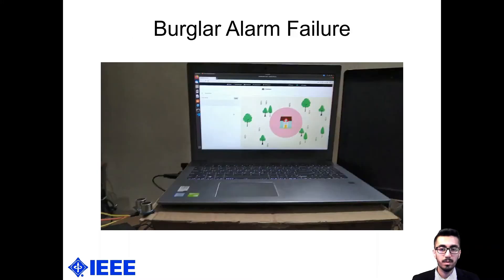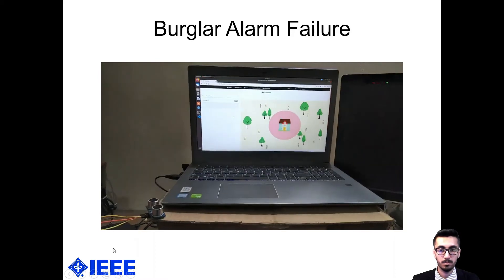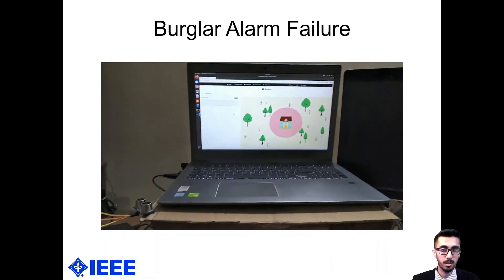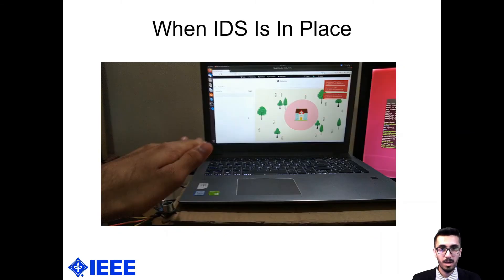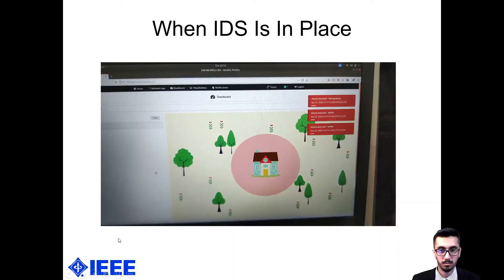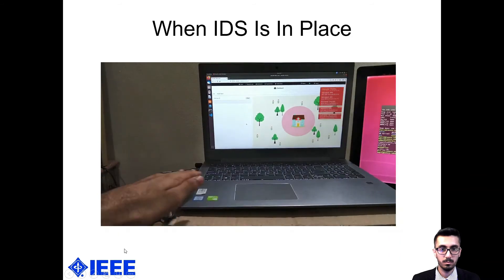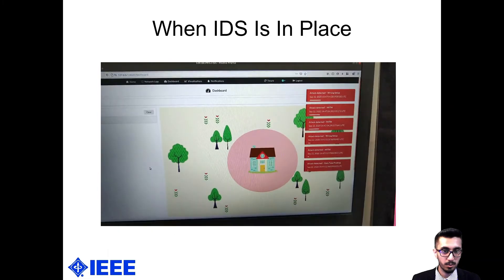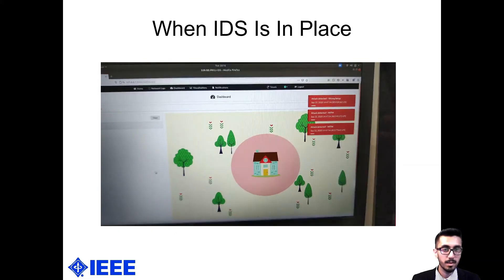Now, what would happen if some hacker manages to disable this burglar alarm? That's right — even after moving the hand on top of the ultrasonic sensor, the burglar was not spotted this time. Now let's see what happens when the IDS is in place, when there's something malicious happening in the network and the burglar alarm is not working. As you can see in the top right corner, there are notifications about an intrusion happening — that is basically the IDS detecting an intrusion in the network.